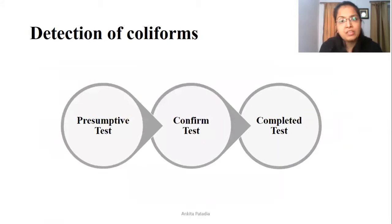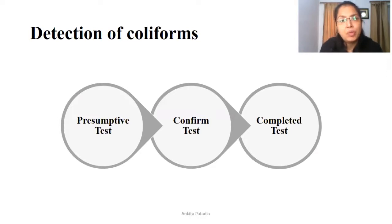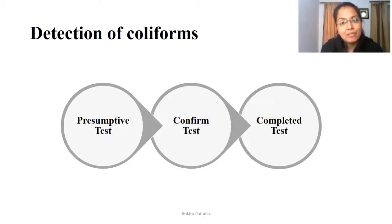In this test there are three major steps: first is the presumptive test, second is the confirmed test, and third is the completed test. In the presumptive test, we are presuming that our water sample is infected with coliform. If the presumptive test is positive, the confirmed test confirms that the organism present is coliform. The completed test then confirms and completes the identification, and the organism is preserved on a nutrient agar slant for further analysis.